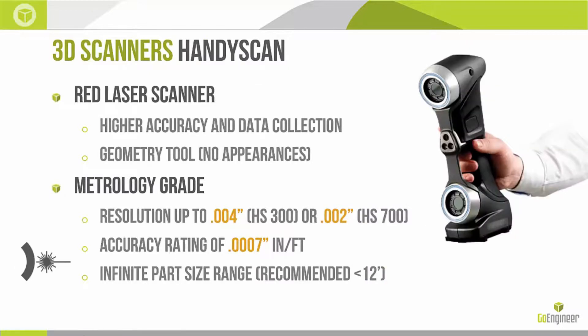The next scanner in the lineup is the HandyScan. This is a red laser scanner designed for very high accuracy and faster data collection. Since the main focus is high detail, it does not have a color or texture option. The HandyScan is known as a metrology-grade scanner and is successfully used for inspections in the manufacturing industry. Resolution goes up to 4 thousandths of an inch for the HandyScan 300, or 2 thousandths of an inch for the HandyScan 700. The volumetric accuracy for both is 7 ten-thousandths of an inch per running foot. The HandyScan has an infinite part size range, but best results are achieved for parts under 12 feet.